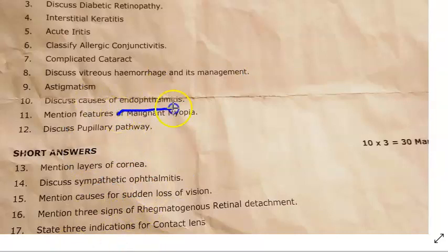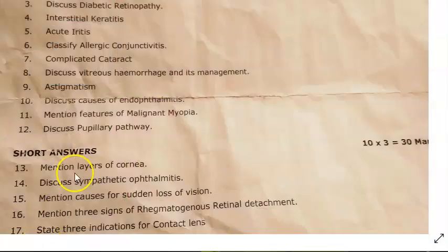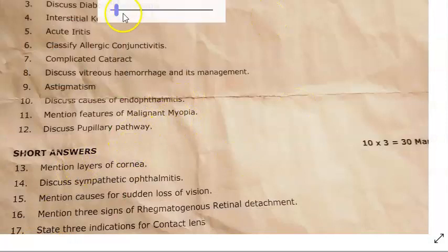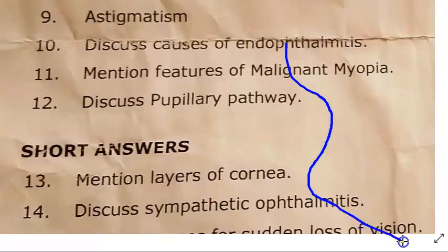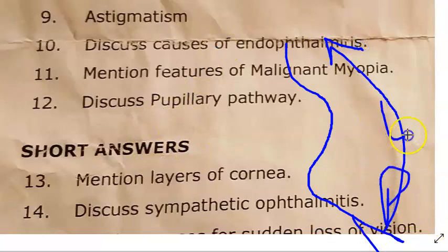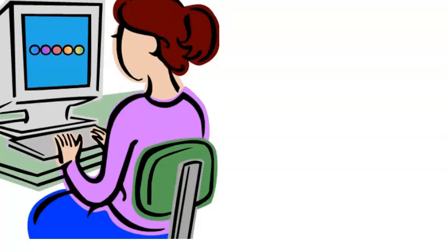Endophthalmitis causes: complication after surgery or injury, and sympathetic ophthalmitis. Malignant myopia is the same as pathological myopia, though the term 'malignant myopia' is not standard in textbooks. Pupillary pathway: optic nerve → optic chiasma → optic tract → lateral geniculate body → radiations → pretectal nucleus → Edinger-Westphal nucleus → ciliary ganglion → short ciliary nerve.